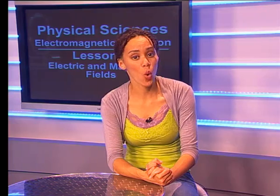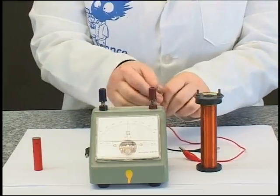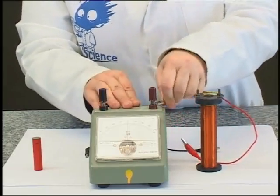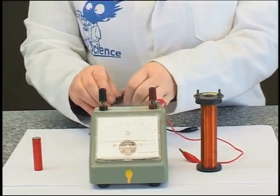Alright, so we know that a changing electric field causes a changing magnetic field. But does it work the other way around? Does a change in a magnetic field cause a change in an electric field? Let's pass a magnetic field past a wire and see if we can get a current in the wire.